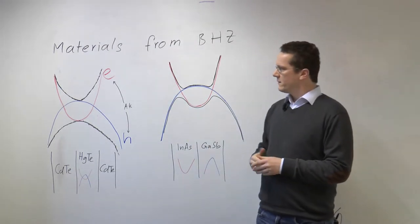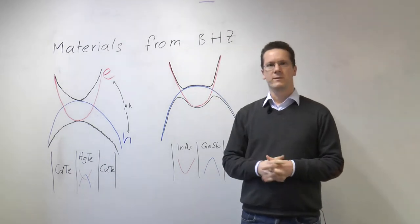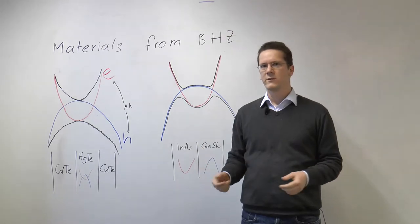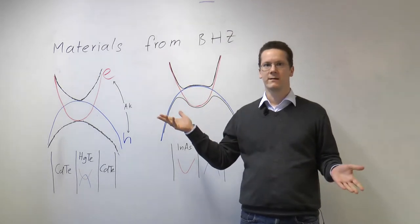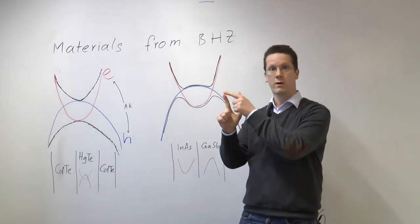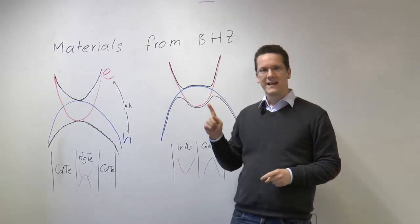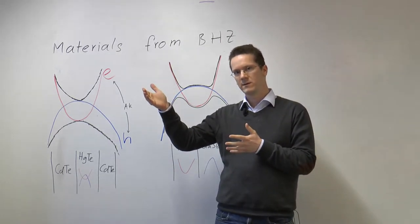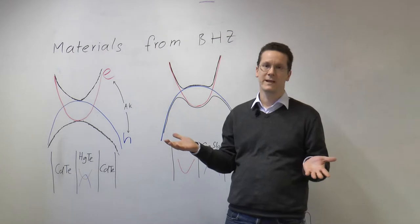Now we have these four ingredients for the BHZ model. It turns out that nature actually gives us in a very common material three ingredients for free, namely in normal semiconductors. Those have electrons, those have holes, and they have a k-linear coupling between them because the electrons come from s-like orbitals and the holes come from p-like orbitals.